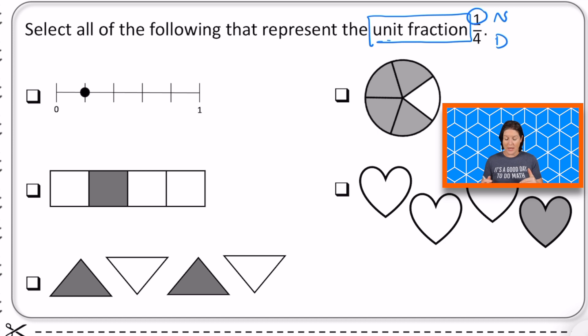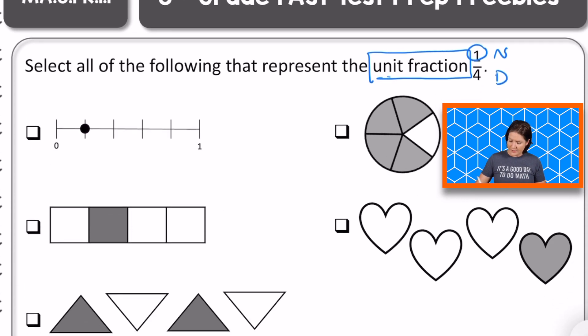For the first one, we have a number line and we see that it is definitely one hop away. That is true. So the numerator would be one, but now let's consider the total number of equal parts in each whole. And that would be one, two, three, four, five. So there are actually five parts in each whole. So the fraction being represented in the first one is one fifth, not one fourth. So should we keep the first one or eliminate it? Eliminate. Yes. Let's go ahead and mark that one wrong and move on.